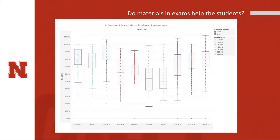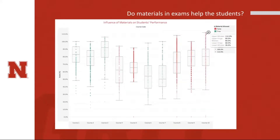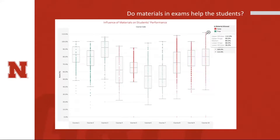Now, do materials on exams help students or not? Here is a distribution of scores across different courses. The green dots are courses where materials were allowed, whereas the red dots are courses where materials weren't allowed. In courses where materials were not allowed, we can see one course with an upper whisker of 112 percent and several others above 100 percent, meaning some students went above and beyond expectations. Both groups are close in terms of average and median scores, but some courses stand out — suggesting students may do better on exams without materials.